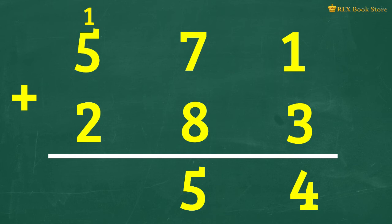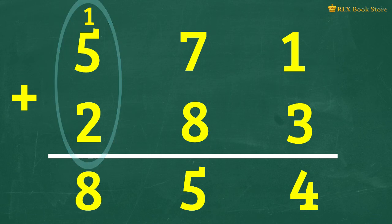Now add all the hundreds. 1 hundred plus 5 hundreds plus 2 hundreds is equal to 8 hundreds. So the answer is 854.